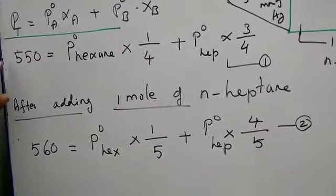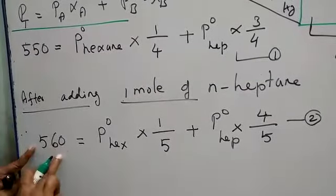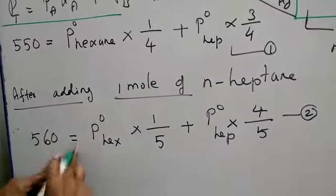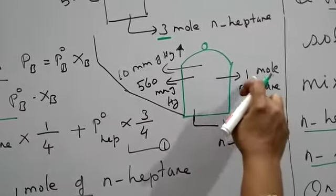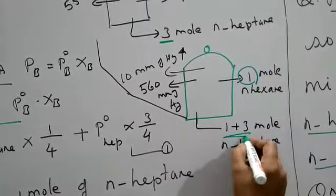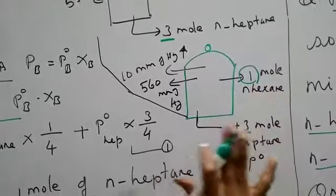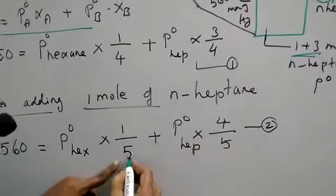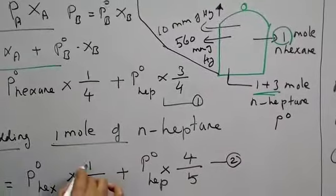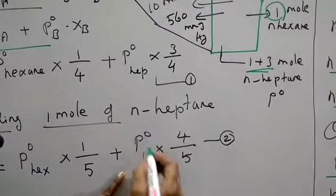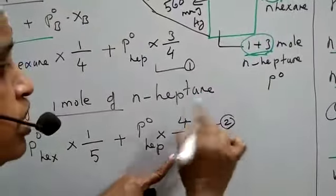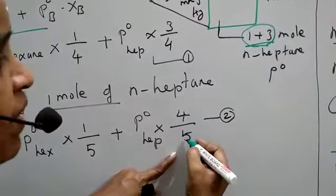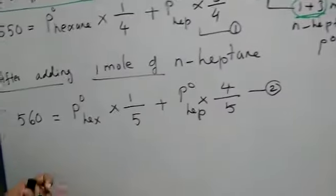After adding 1 mole of n-heptane, the equation changes. The pressure increases by 10, so it is 560. This you are taking as is. In the denominator, now you can see this diagram. Here it was previously 1 mole, now it is 4 moles. So 1 plus 4 is 5 moles total. So here total moles is 5 and its individual mole is 1, plus P naught of heptane times its individual. Now you can see 1 plus 3 synchronized, 4 by 5 total moles. So equation 1 and 2 are ready.